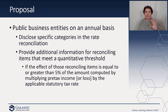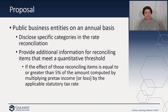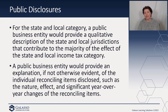Thankfully, some of this proposal is only for public companies. Public companies would have to, on an annual basis, disclose the specific categories in the rate reconciliation — providing a breakdown of federal versus state versus foreign — and then provide additional information for reconciling items that meet a quantitative threshold. If those items are equal to or greater than five percent of the amount computed, they would have to provide some additional explanation. For the state and local category, they would also provide a qualitative description of the jurisdictions that contribute to the majority of the effect of state and local taxes.